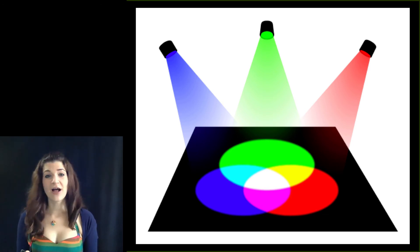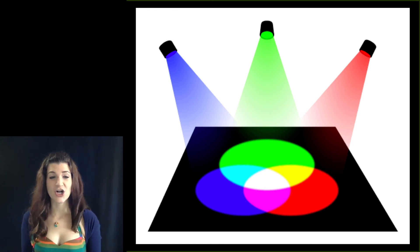These are different from primary colors for pigments, the red and yellow and blue that you likely learned as a kid in art class. So why are blue and green and red special for light mixing?